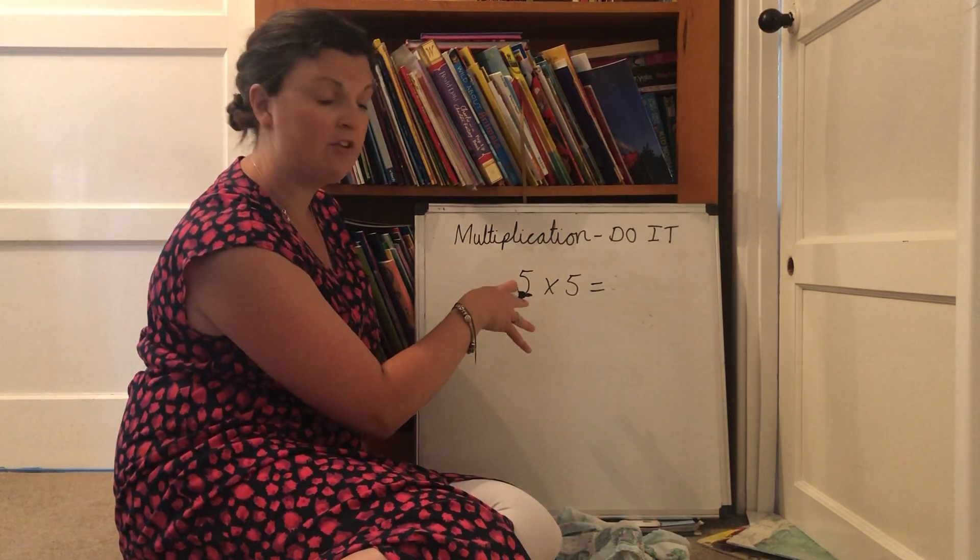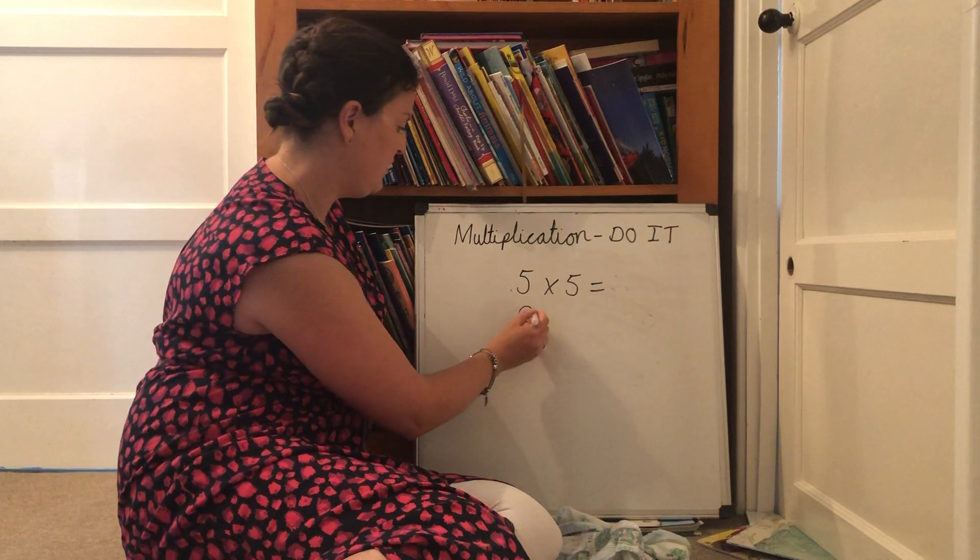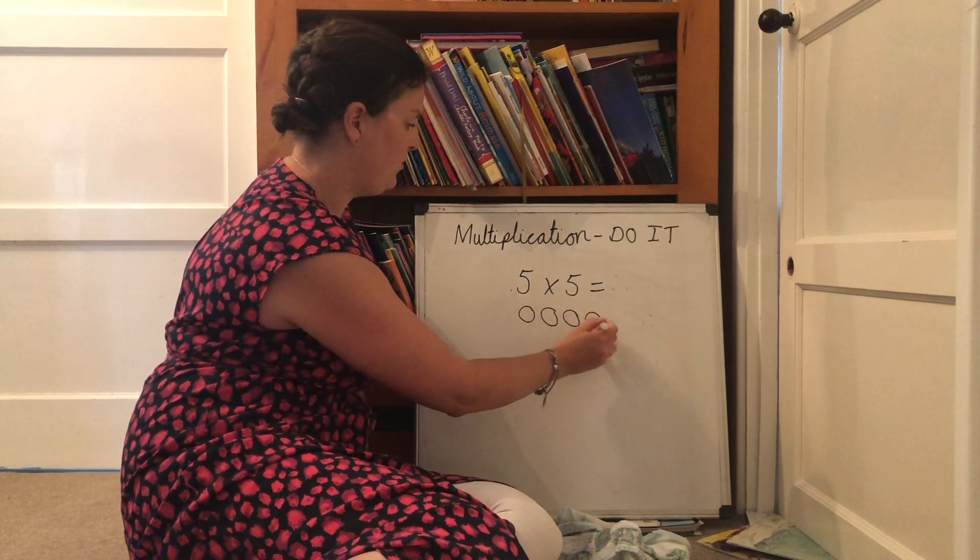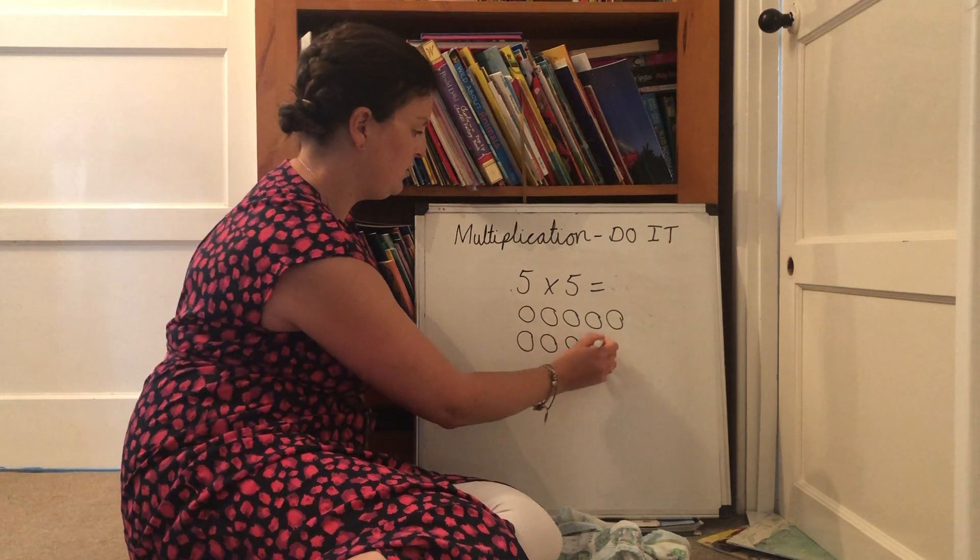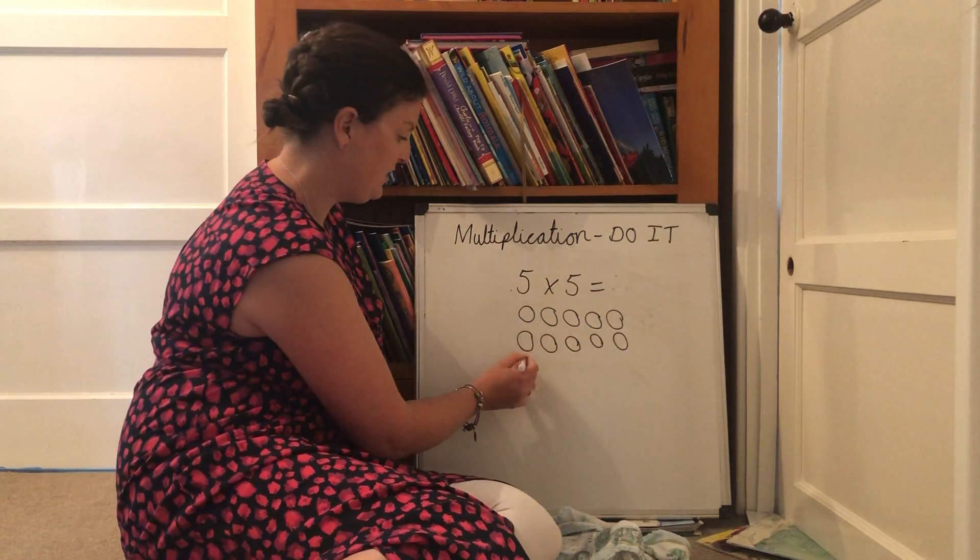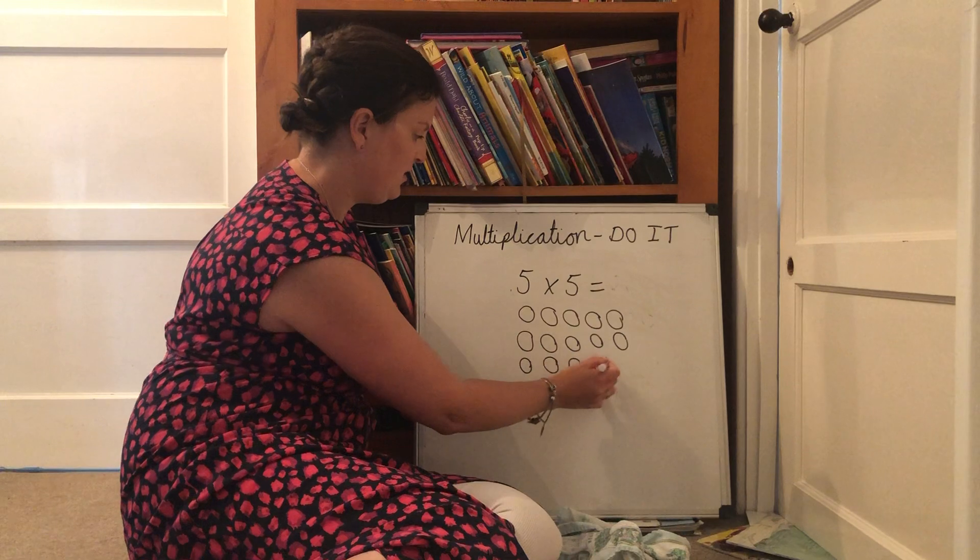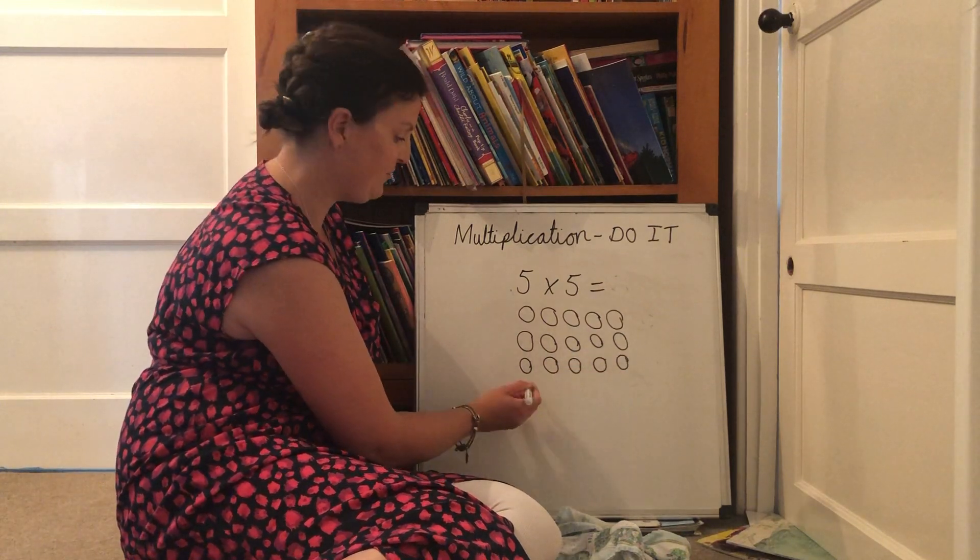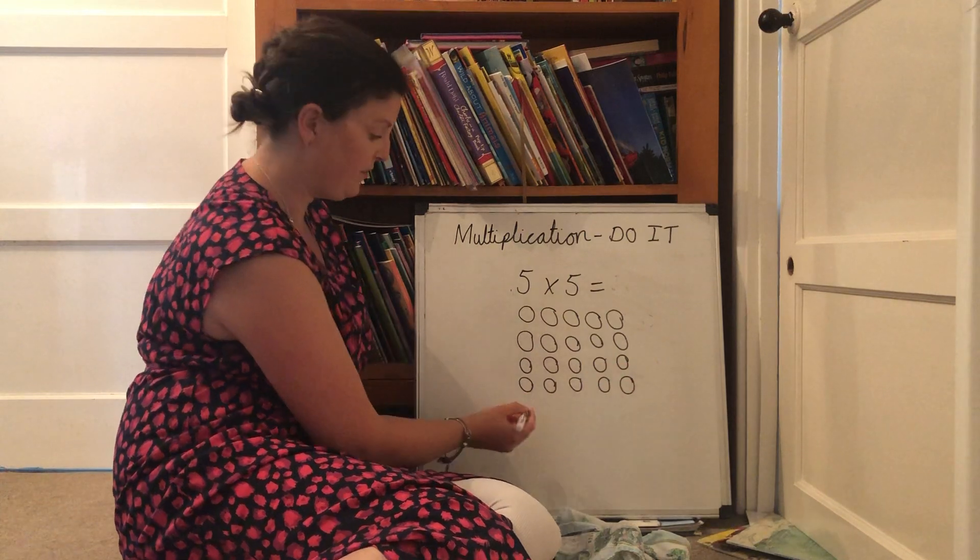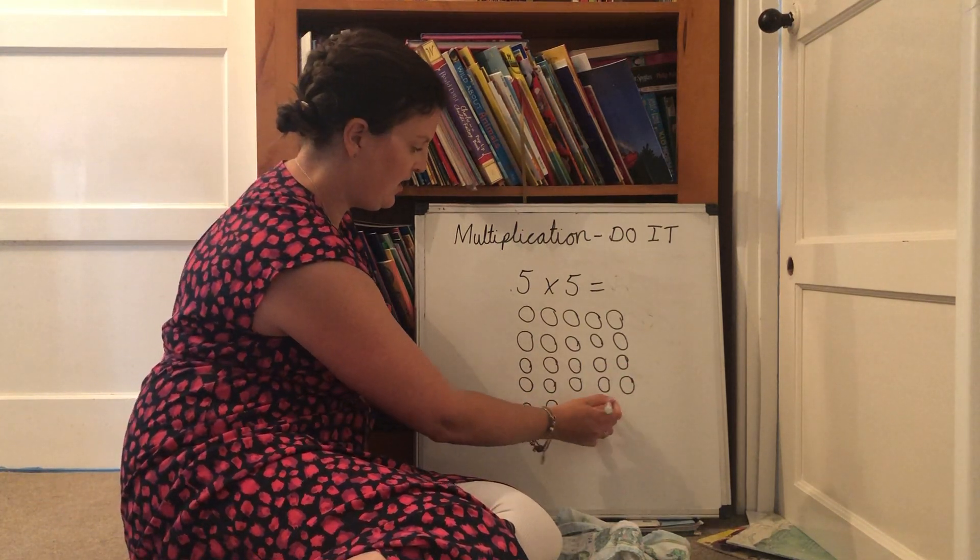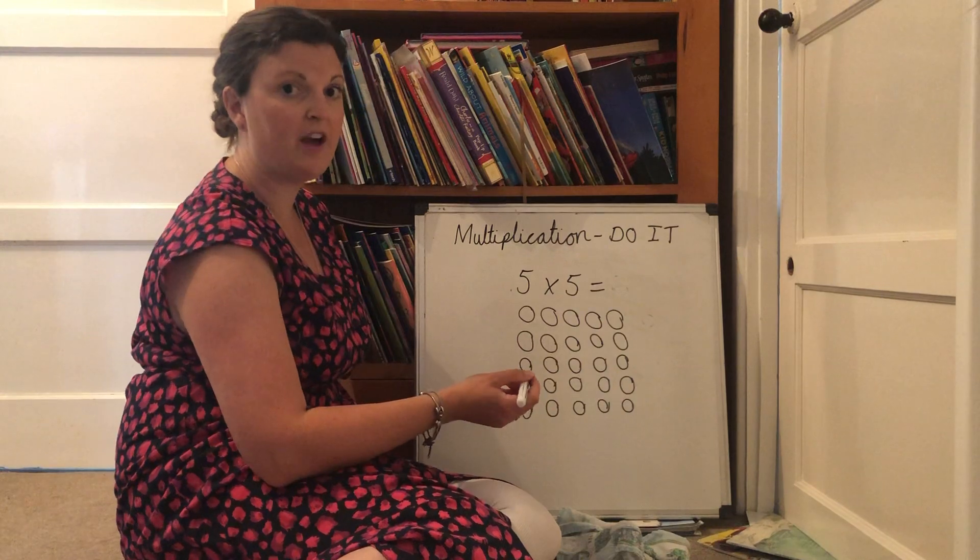the first thing I have to do is I copy down my calculation and then I have one group of five, two groups of five, three groups of five, four groups of five, five groups of five.